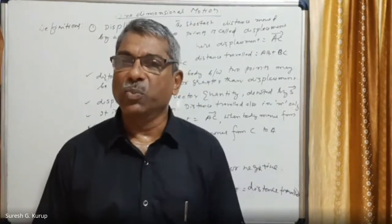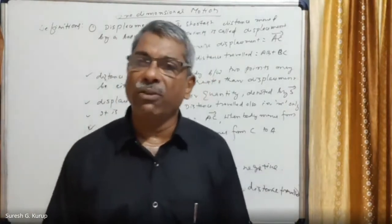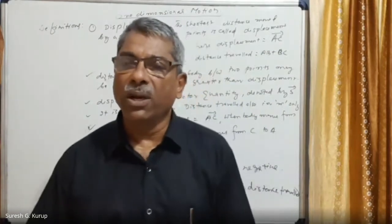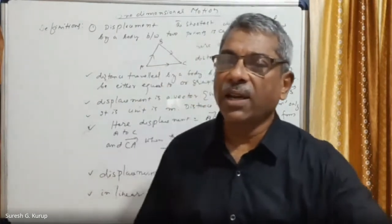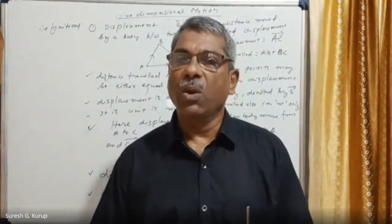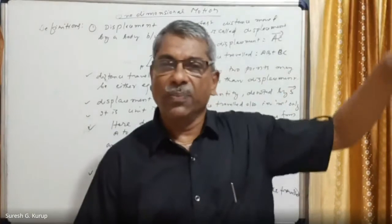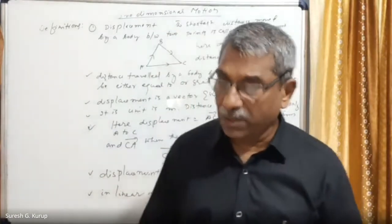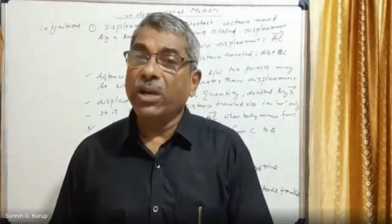If we stand at the corner of a table, one horizontal side is the x-axis, the other side of the table is the y-axis, and if we erect a line upwards at the corner, that will be the z-axis. So that is the frame of reference.